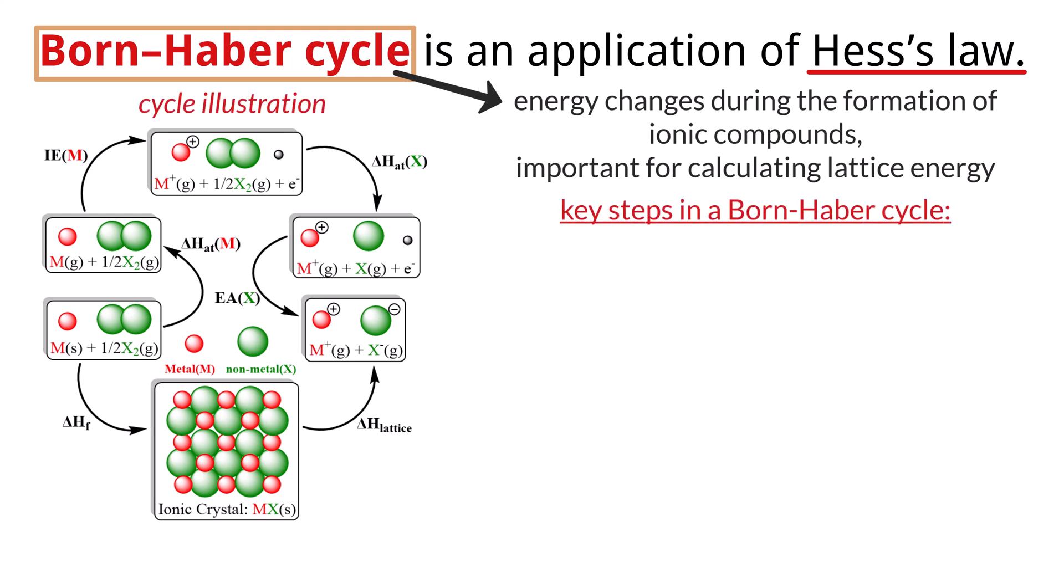The key steps in a Born-Haber cycle include atomization enthalpy, delta H sub AT. This is the energy change that occurs when one mole of gaseous atoms of an element is formed. This is always positive and therefore endothermic. It is also referred to as the sublimation enthalpy.